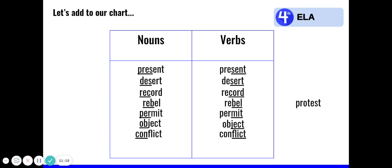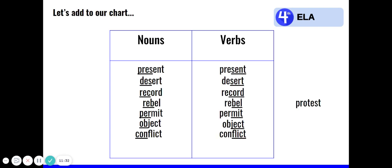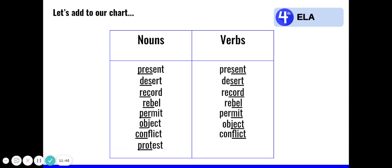And our last homographs are protest and protest. When I accent the first syllable, pro, in protest, protest means a statement or action of expressing disapproval. This is the noun form, so let's add it there. And I've underlined the syllable pro. Now, the verb form, protest, is very similar. It means to publicly demonstrate strong objections. We stress the second syllable in this case. Let's add it to our verb column and underline the second syllable. Protest and protest.